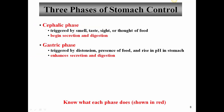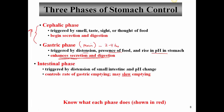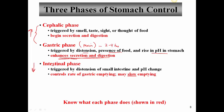The next phase of stomach control is the main phase called the gastric phase. This phase generally lasts anywhere from two to maybe four hours, depending on the material ingested. It's triggered by distension of the stomach, the presence of food in the stomach, and the rise in pH as food enters the stomach — we dilute the acid that's already there, reducing the concentration of hydrogen ion. This phase enhances secretion and digestion in the stomach. We also have one additional phase that serves to downregulate digestion: the intestinal phase.